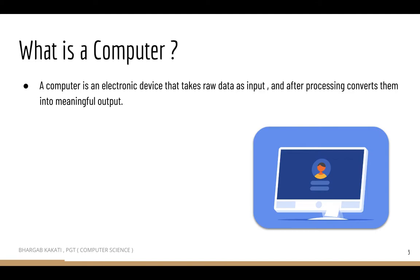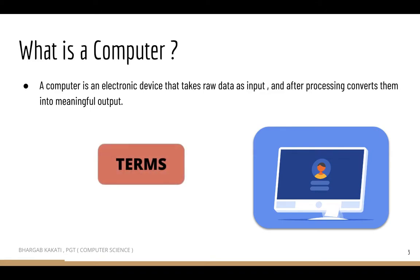What is the meaning of 'raw data as input'? When we interact with the computer we use various input devices like keyboard, mouse, etc. The data we give from outside is known as the input. The computer takes the input, processes it — meaning it calculates — and then converts it into a meaningful output, which is displayed with the help of an output device like the monitor.